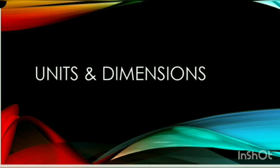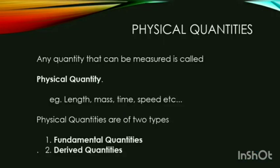First of all, in this chapter we have to discuss what a physical quantity is. Any quantity that can be measured is called a physical quantity. Examples include length, mass, time, speed, etc.